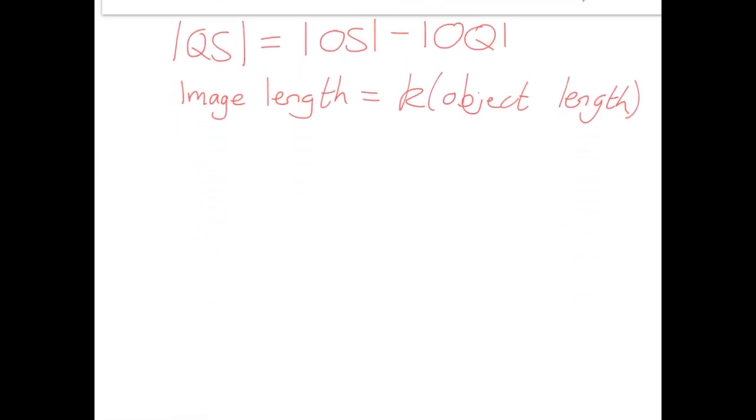So our image length, which is our OS, is equal to K, which we saw was 2.25 times our object length, which is OQ. And we know what OQ was given in the question was 8, so that means OS is equal to 2.25 times 8, which is 18.